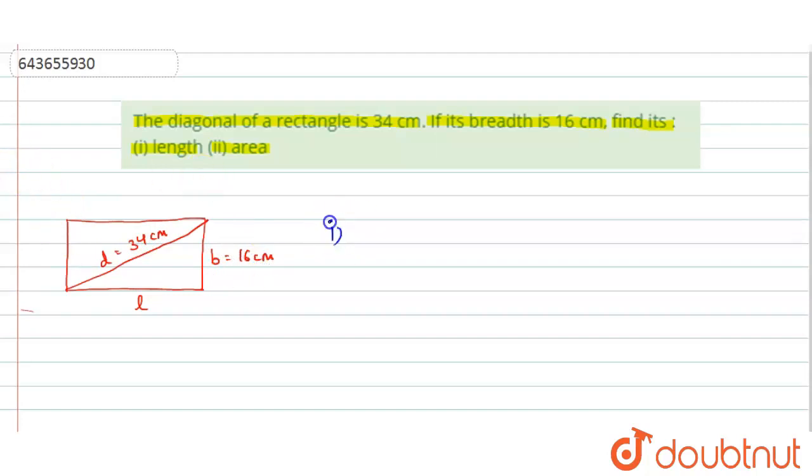To find the length, we will use the Pythagoras theorem in this triangle. You can see triangle ABC. In triangle ABC, you can apply the Pythagoras theorem.